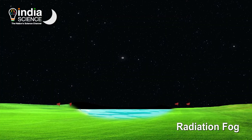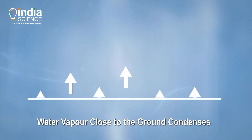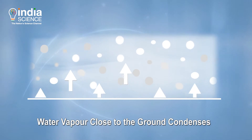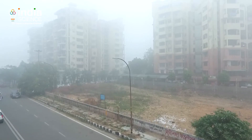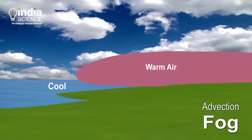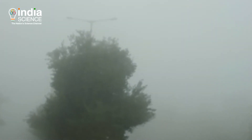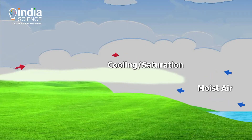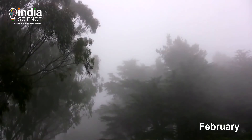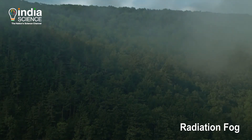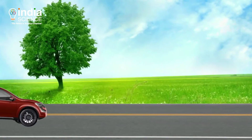Radiation fog forms in situ at night under clear, cold, and relatively calm conditions when water vapor close to the cold ground condenses as it cools. This fog is a localized event and mostly forms in the morning, lasting for a few hours. Advection fog forms when moist warm air flows over a relatively cold surface and is cooled. Normally during November to mid-December and in February, radiation fog occurs in north India, while during peak winter from mid-December to end January, north India gets covered with a mix of advective fog and radiation fog.